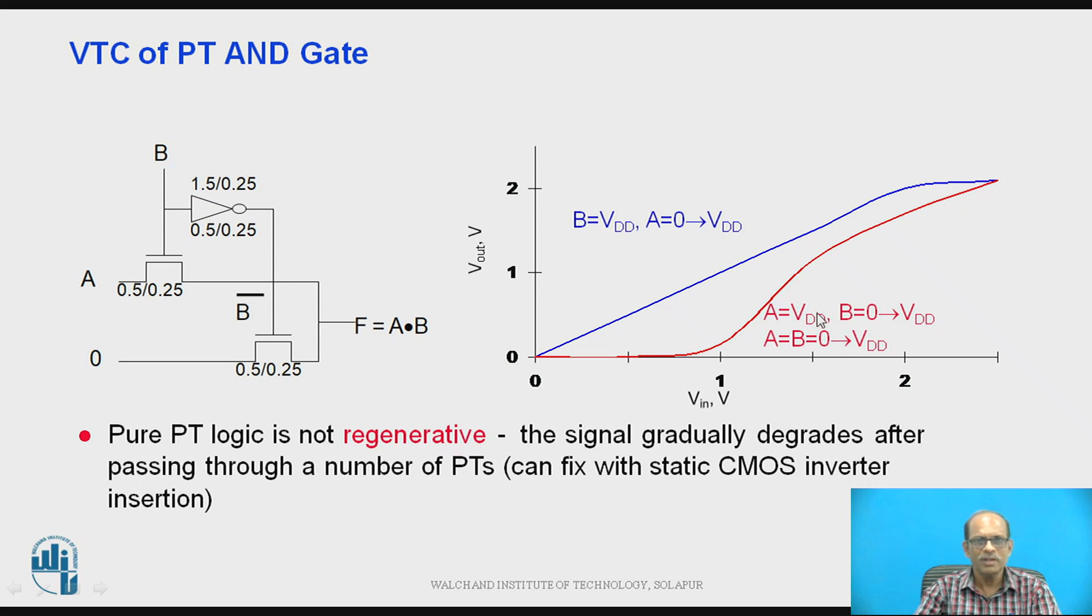A is equal to VDD and B changes from 0 to VDD. Whenever B changes from 0 to VDD, this NMOS will come into conduction if the voltage applied to the gate exceeds the threshold voltage and therefore initially if input voltage is small, output is 0 and then it is increasing. So it is non-linear. So here in blue curve it is linear. So pure pass transistor logic is not regenerative. The signal gradually degrades after passing through the number of pass transistors.